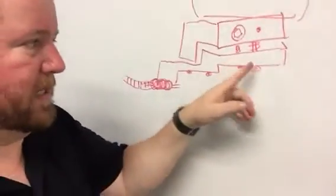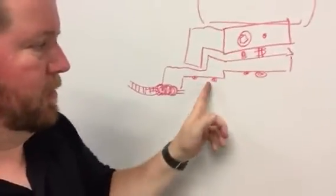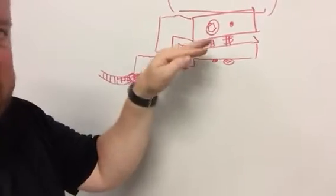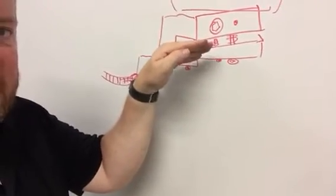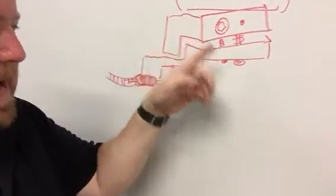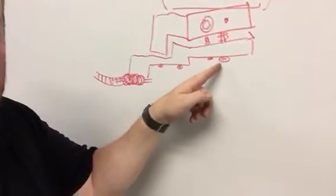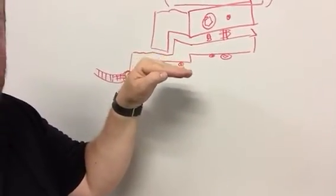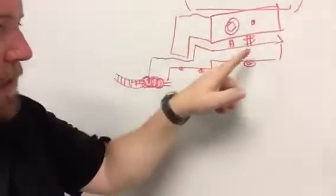So what I did was loosen these two, adjusted this one to where I could at least get a little bit of range of motion, and then tighten those back, and then use this one to set my tension on that spring.